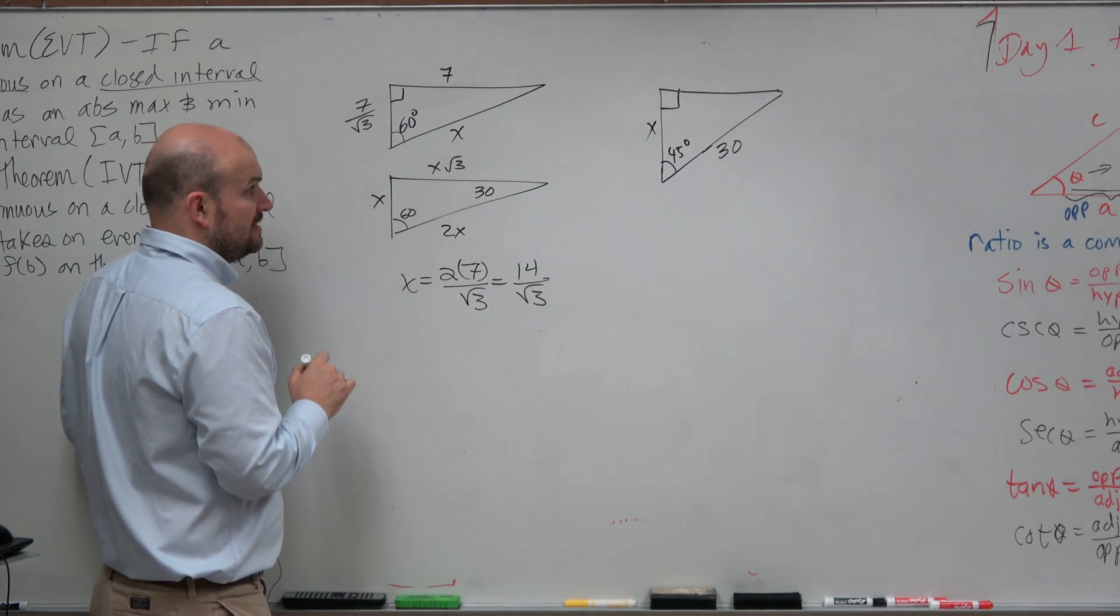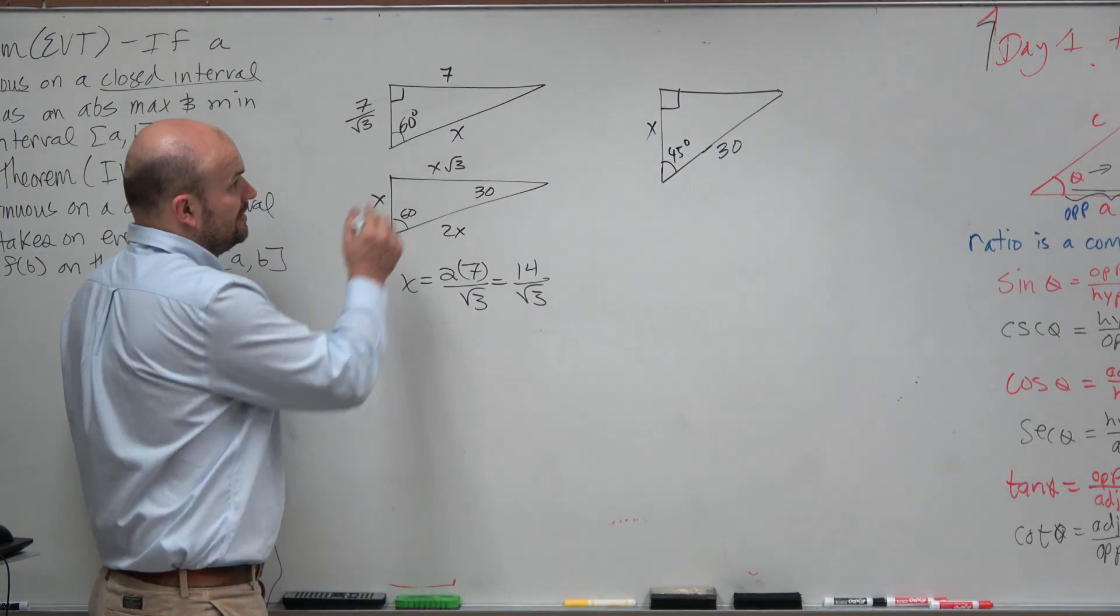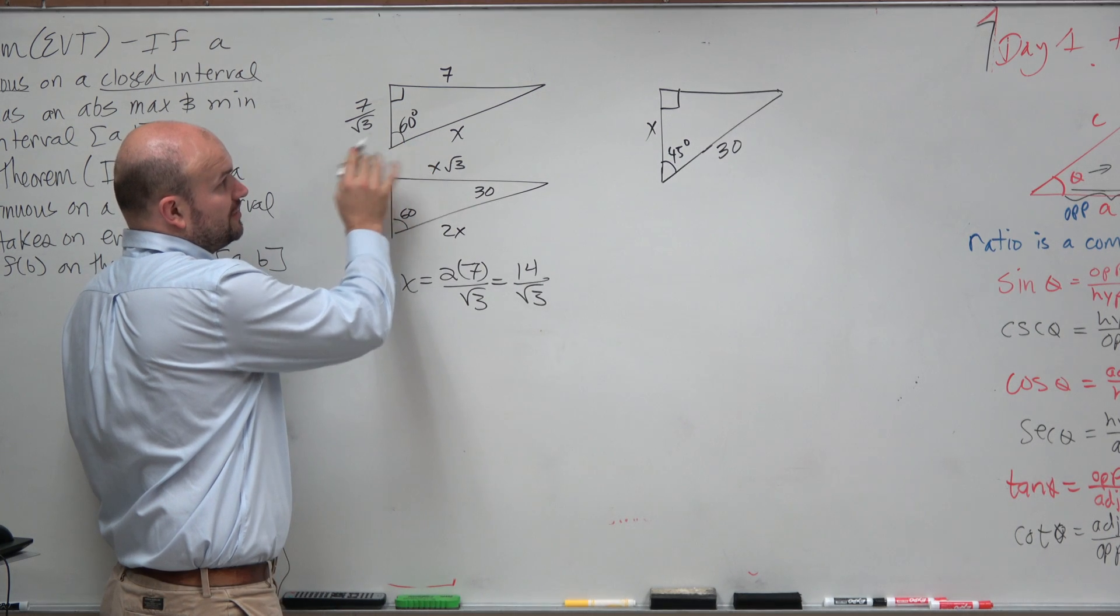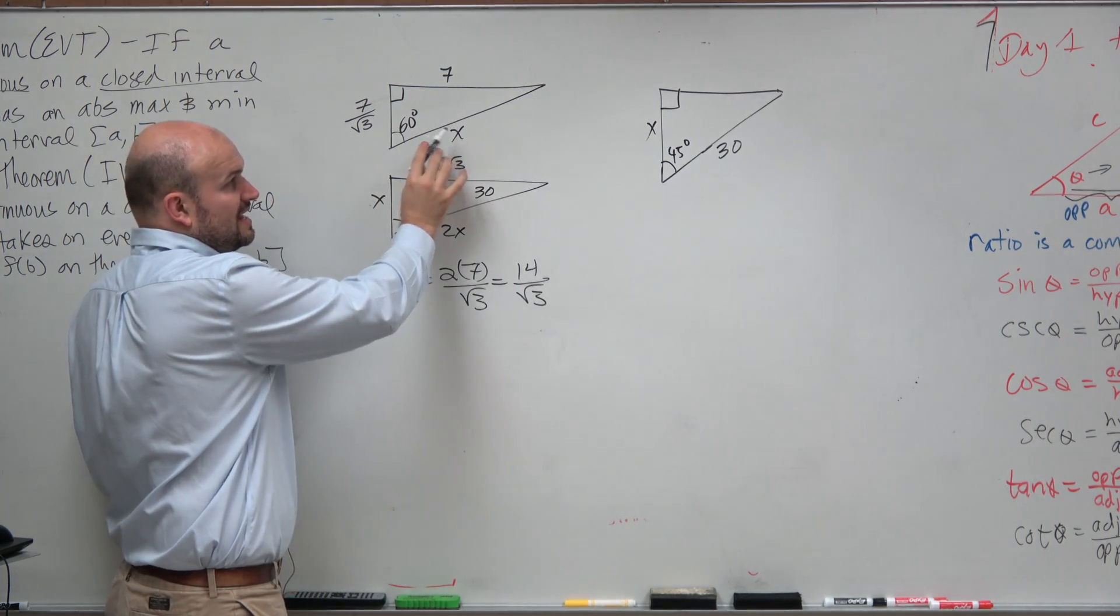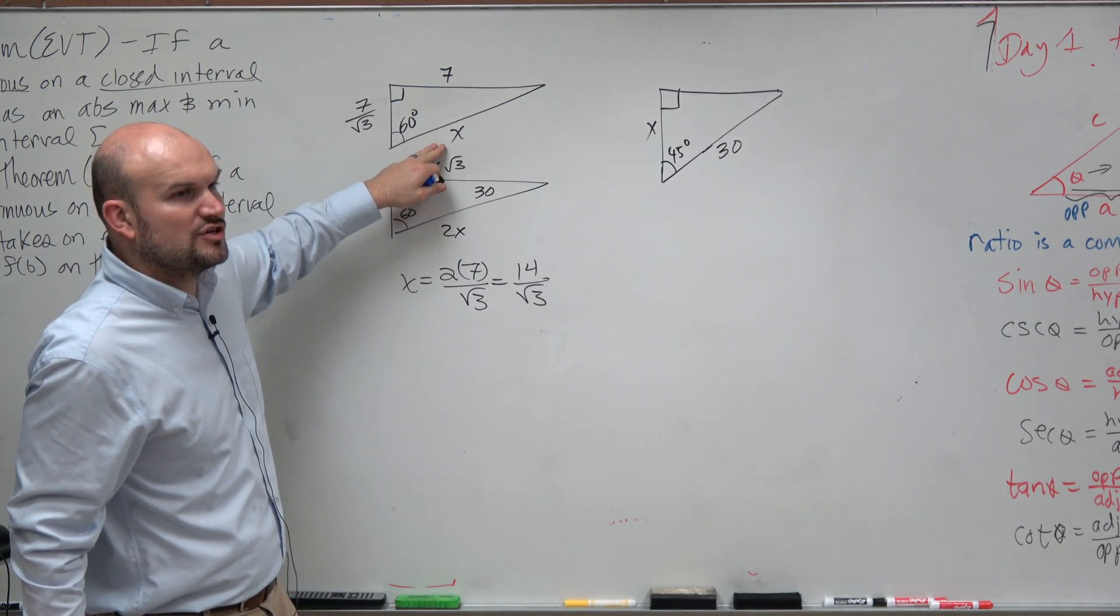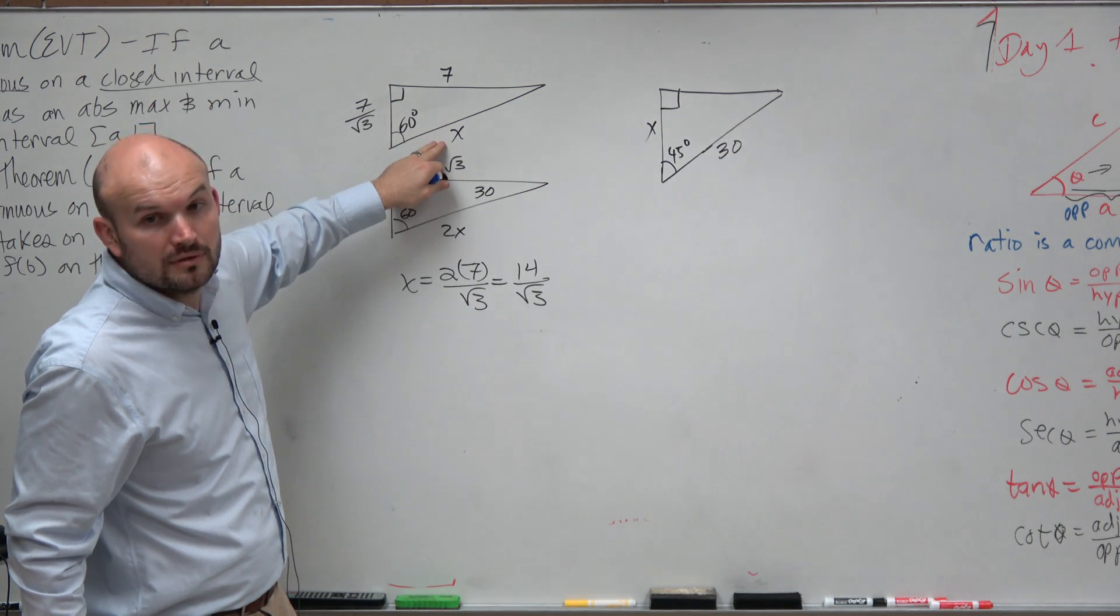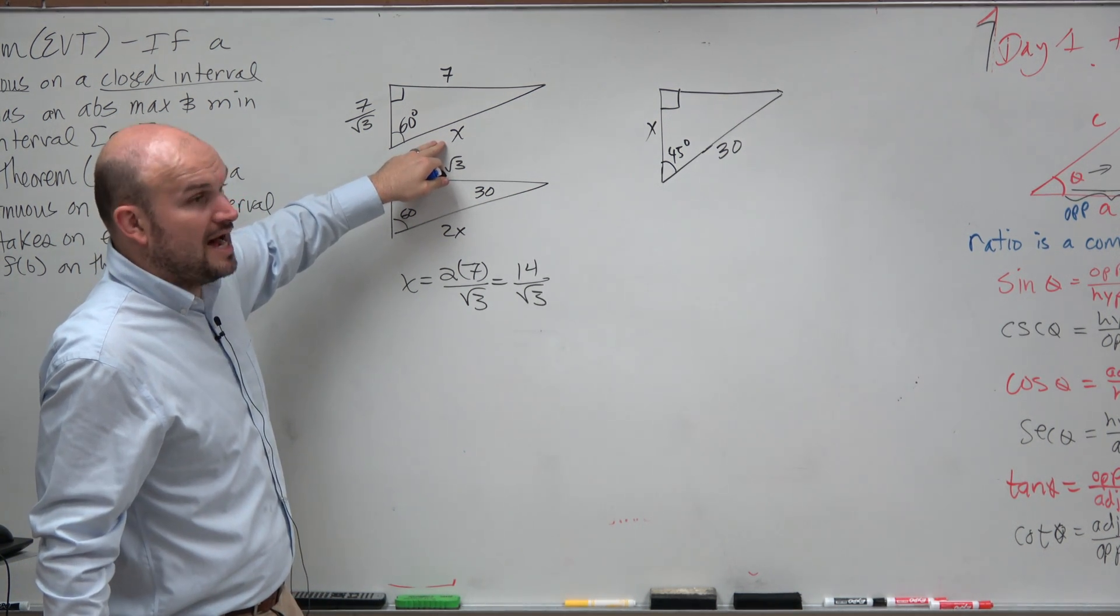Another thing we could look at is why don't we just create a ratio? If here's 60 degrees, if we're trying to find this length, what length is this on the triangle? Is it the adjacent, opposite, or hypotenuse?